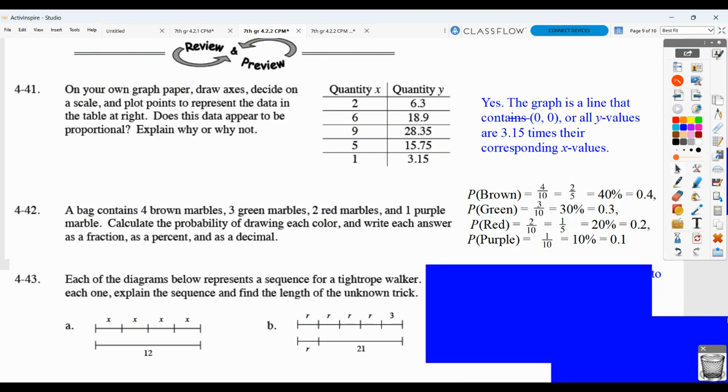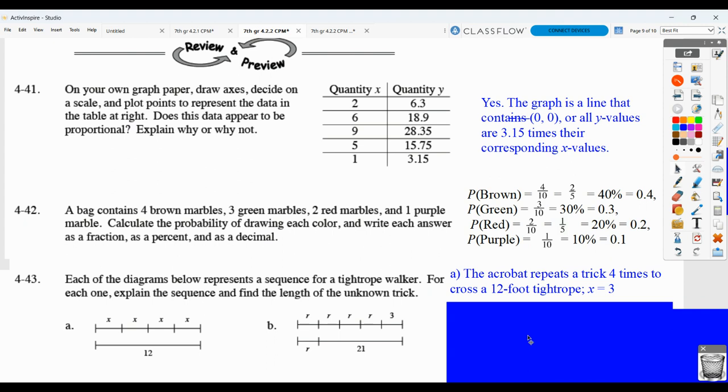Then, we have this next one. They want you to explain the sequence and find the length of the unknown trick. So, let's start with A here. We know that the value of x plus itself plus itself plus itself has to equal 12. So, in other words, 4 x lengths have to equal 12. Well, then, that means x would have to equal 3. As far as explaining the sequence, we would just say that this acrobat is repeating a trick four times to cross that 12-foot tightrope. Because, again, that's what we're seeing in our diagram.